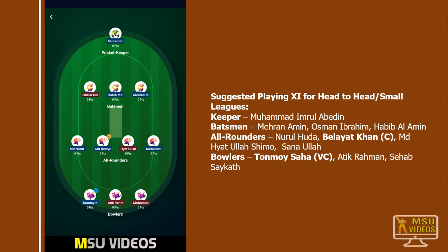For the second team combination: Atip Rahman, then Shaybul Sayeth or Shaybulla. Alternatively, you can select Abidin, Megran, Abin, Ibrahim, Habibul, Agman, Nurul Huda, Belayed Khan, Shimo, Sanavulla, Tanah Saha, Atik Rahman, and Shayb Sayeth. You can select Belayed Khan as captain and Saha as vice captain. Nurul Huda is also a good option for captain or vice captain.